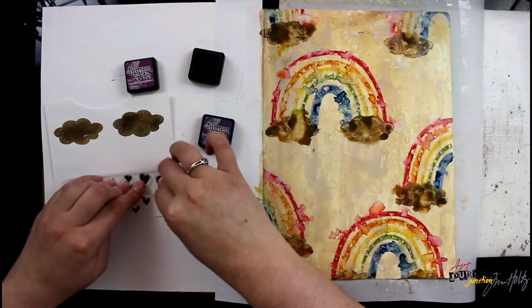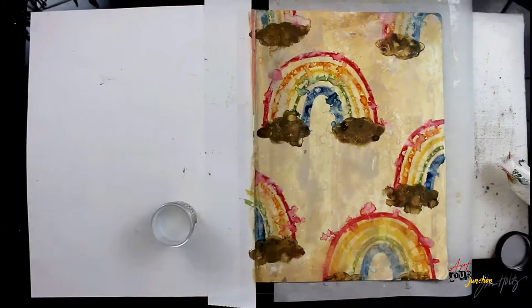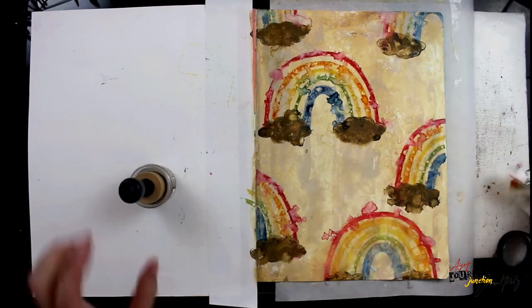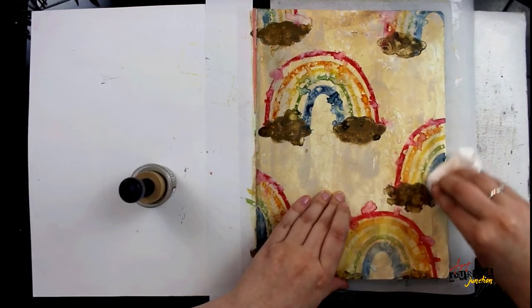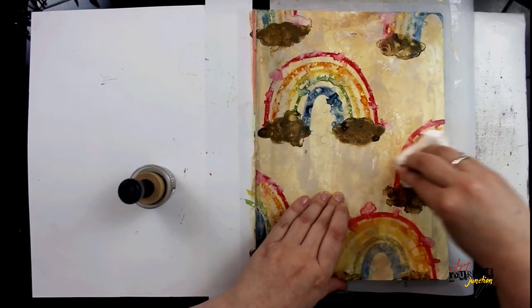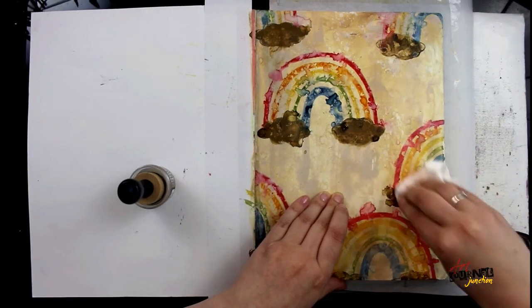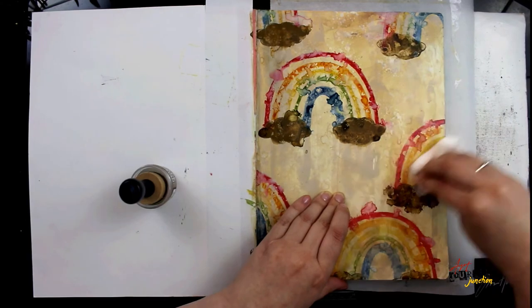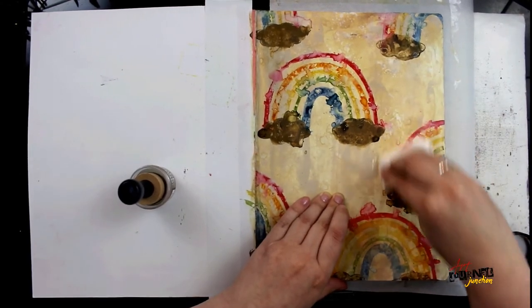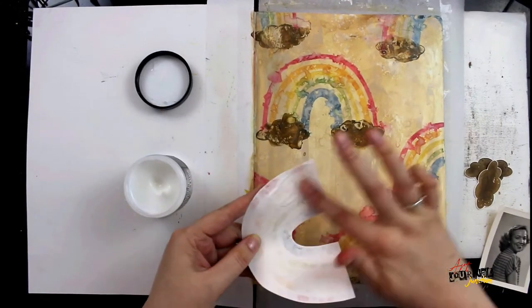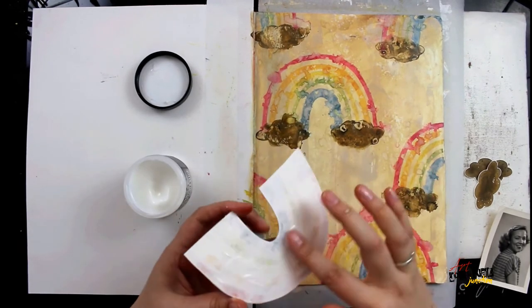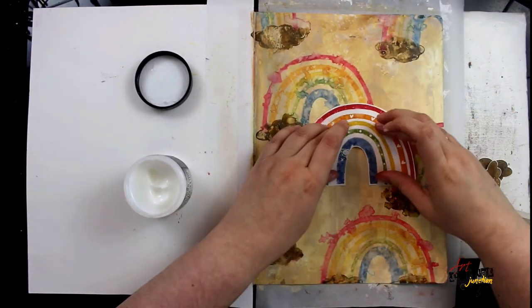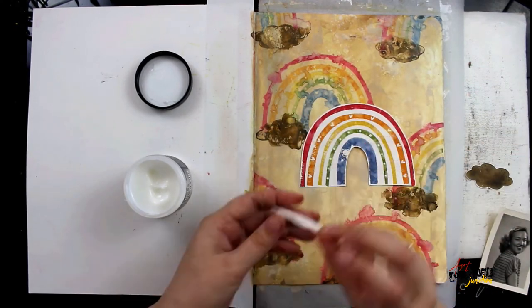After everything is dry, I'm going to apply some distress micro glaze with the mini blending tool over all the inks and then buff away the excess with a paper towel. Distress micro glaze protects water-reactive products and seals it and makes it permanent. So as I'm continuing to work on this, I am not risking anything I've done so far.